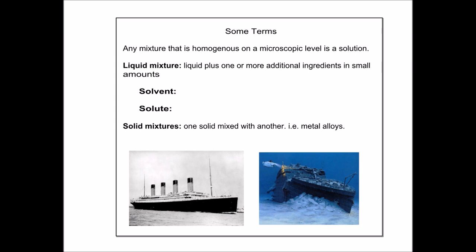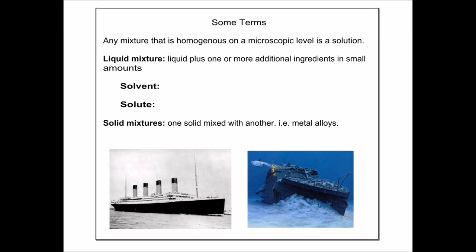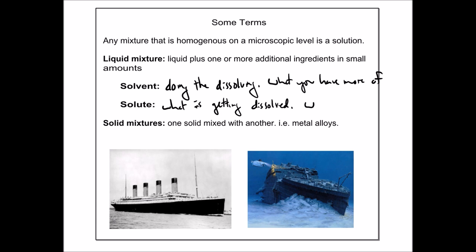Here's some additional terms. Any mixture that is homogenous on a microscopic level can be called a solution. A liquid mixture is a liquid plus one or more additional ingredients in small amounts. Here we can talk about a solvent, the thing that's doing the dissolving. This is typically what you have more of. And the other piece of a mixture, the other part of a mixture, is the solute, what's getting dissolved.